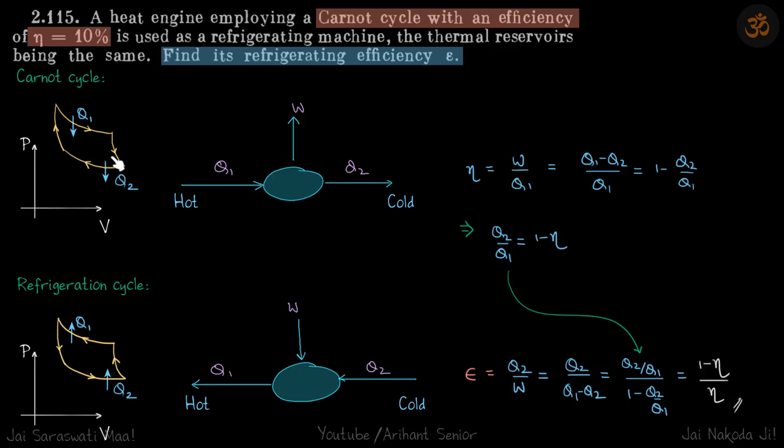Now in the refrigeration cycle, the cycle is just reversed. It still operates between the same two reservoirs, but this time it takes heat Q2 from the cold reservoir and releases heat Q1 into the hot reservoir, and work W is now required.